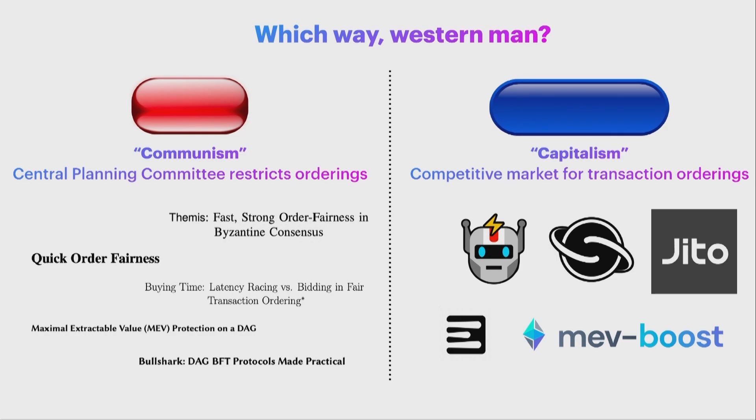So of course, there have been sort of multiple different ways that people have tried to go about this. It's not lost on me that everything in the communist side is only a paper and not a product, and everything in the capitalism side is a product and not a paper. But the communism side is things where the mechanism designers or the protocol designers are trying to enforce a lot of constraints on what types of orderings are allowed to be conveyed to the blockchain. And the capitalism side, the blue pill, is how do you make a competitive market for transactions?